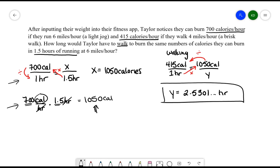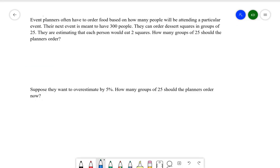Let's try another example. Event planners often have to order food based on how many people will be attending a particular event. Their next event is meant to have 300 people. They can order dessert squares in groups of 25. They are estimating that each person would eat two squares. How many groups of 25 should the planners order? Looking at the key information here, what we've got is that we have 300 people, and we're estimating that each person is going to have two squares.